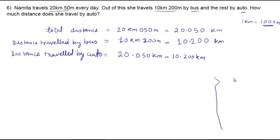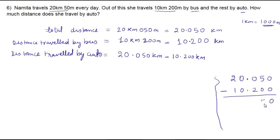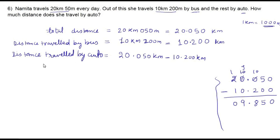Let's do the rough work: 20.050 minus 10.200. 0 minus 0 is 0. 5 minus 0 is 5. 0 minus 2 is not possible — take borrow from left. 2 becomes 1, 0 becomes 10, then 9, then 10. 10 minus 2 is 8. Keep decimal point as is. 9 minus 0 is 9, 1 minus 1 is 0. So the total distance traveled by auto is 9.850 kilometer.